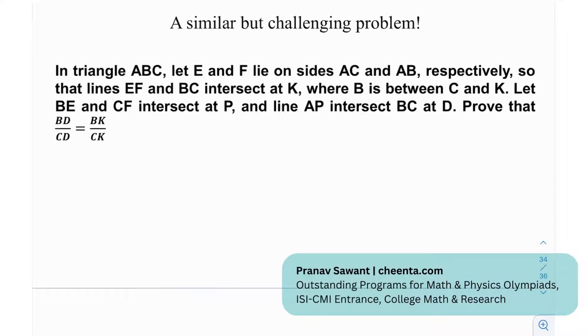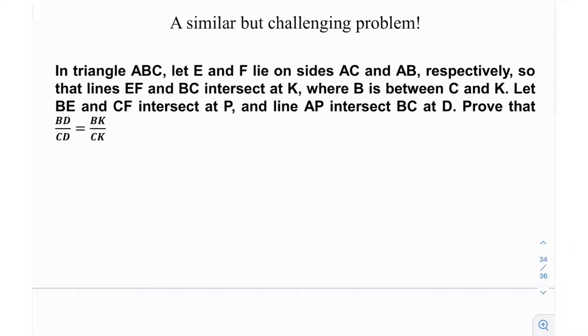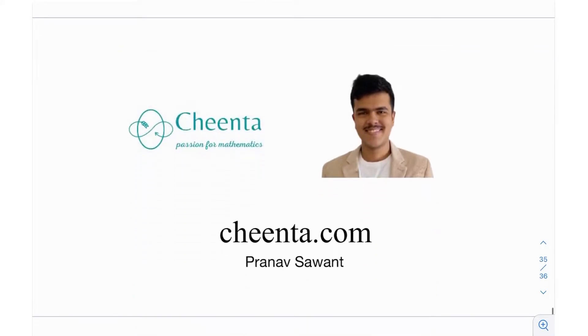Okay, so we have a similar challenging problem. In triangle ABC, let E and F lie on sides AC and AB respectively, so that lines EF and BC intersect at K, where B is between C and K. Let BE and CF intersect at P, and line AP intersects BC at D. Prove that BD over CD is equal to BK over CK. So again, try to draw the figure on your own at least, and then maybe try and use the Menelaus theorem. I'm giving you that hint that this is purely a question of Menelaus theorem. Maybe try it out, and if you're able to solve it, let me know. Until then, I'll see you in the next video. Thank you very much and bye.